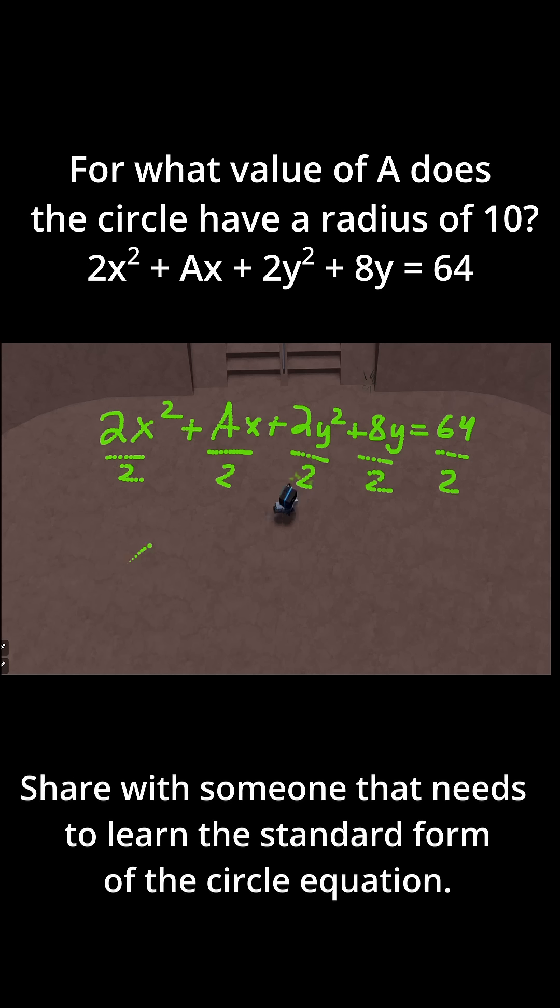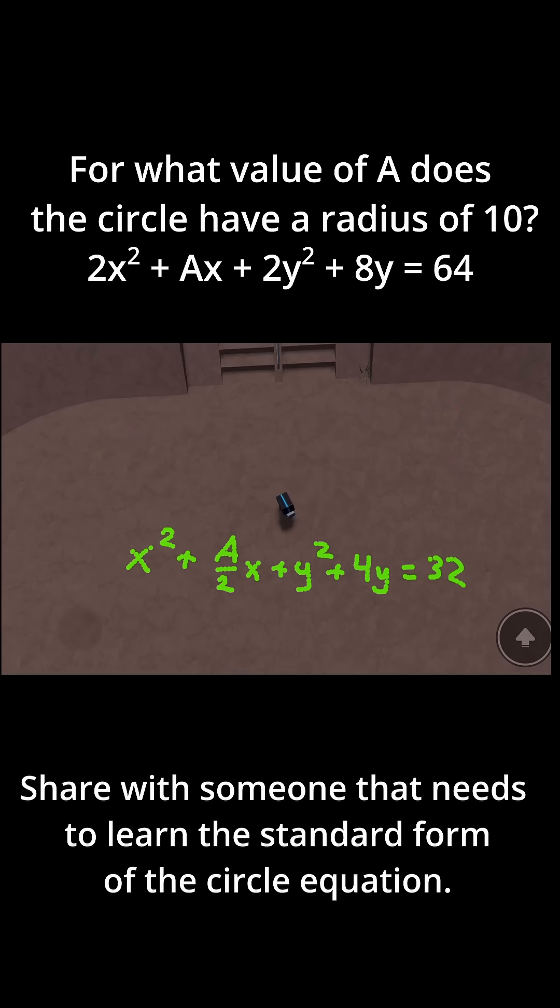So if I do all of this work, I'll have x² + (a/2)x + y² + 4y = 32. Let me erase all this up here. And now let's transform this equation into standard form.